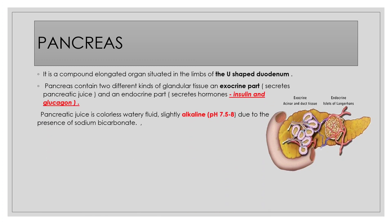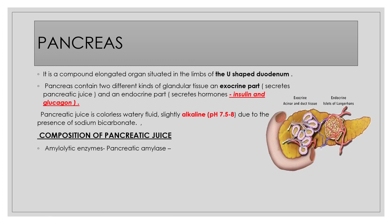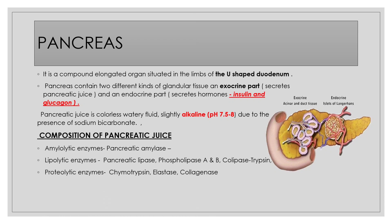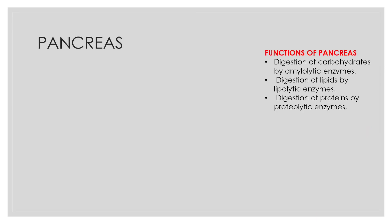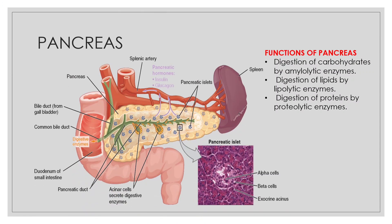Another major organ is the U-shaped pancreas. During the process of churning, the highly concentrated HCl converts pepsinogen to pepsin, which acts on the digestion of proteins. The major functions of the pancreas include digestion of carbohydrates by amylolytic enzymes, digestion of lipids by lipolytic enzymes, and digestion of proteins by proteolytic enzymes.